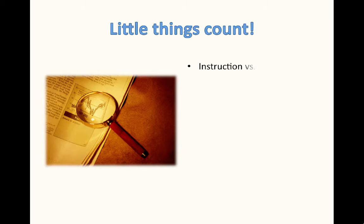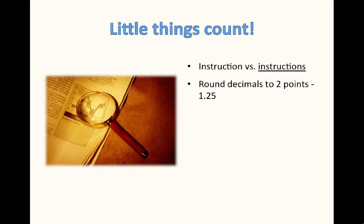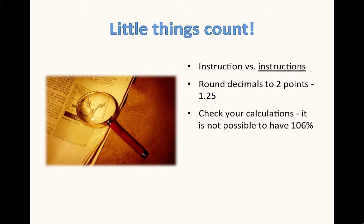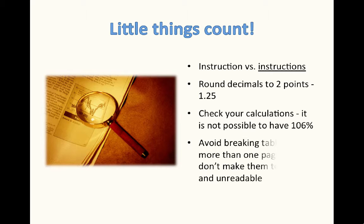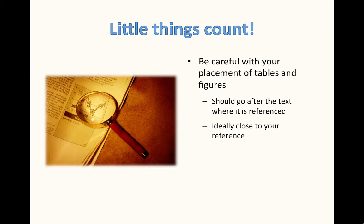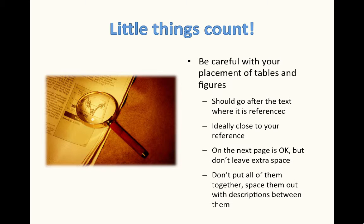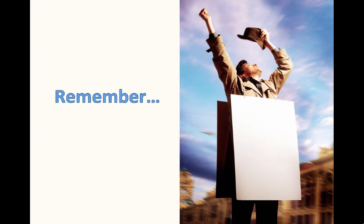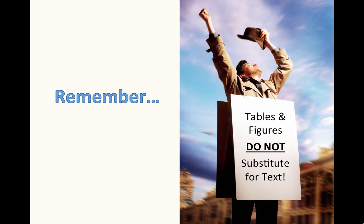Little things do count. Sometimes people are confused between the word instruction and instructions. Instruction is a body of work provided for educational purposes, whereas instructions are like how-to booklets on a piece of equipment. So generally, you want to use the word instruction. Please round decimals to two decimal places rather than three or four. Also, check your calculations — it's not possible to have 106%. Avoid breaking tables into more than one page, but don't make them too small and unreadable. Be careful with the placement of your tables and figures — they should go after the text where they're referenced, ideally as close to your reference as possible. On the next page is okay, but don't leave extra space in between. Don't put all of them together; space them out with descriptions in between. Remember, tables and figures do not substitute for text — you need to describe them.